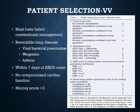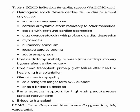For VV ECMO patient selection: patients must have failed conventional management, have reversible lung disease (viral/bacterial pneumonias, Wegener's, asthma), usually within seven days of ARDS onset, no compromised cardiac function, and a Murray lung injury score greater than 3. Patients on pressors due to high intrathoracic pressures from lung injury alone can still be tried on VV ECMO. But if there's a primary cardiac disturbance, those patients should move to VA ECMO.